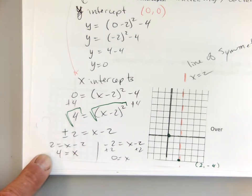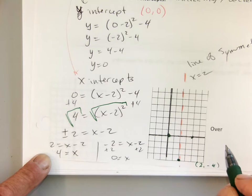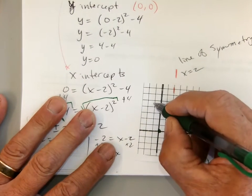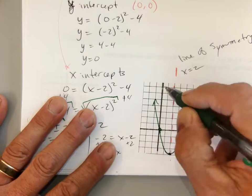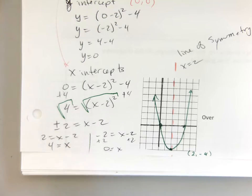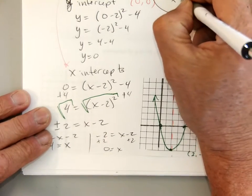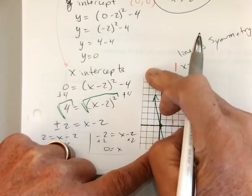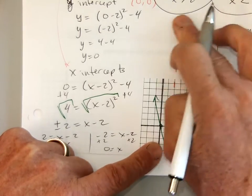So I've got x-intercepts. Let's check out my graph: 1, 2, 3, 4, and my 0. Now I can graph it. It is going uphill — increasing — when x is greater than 2.